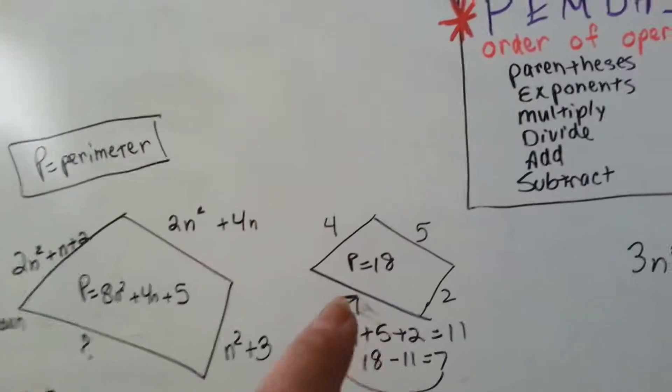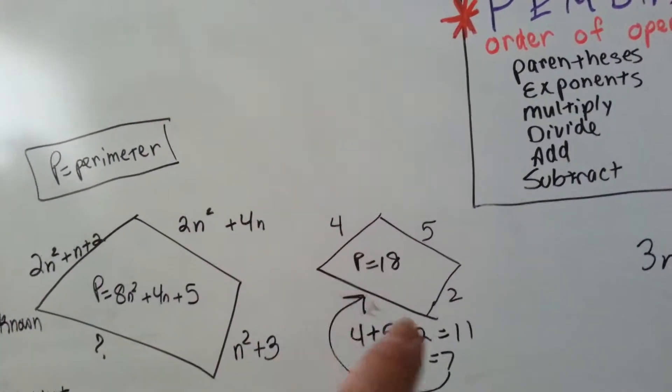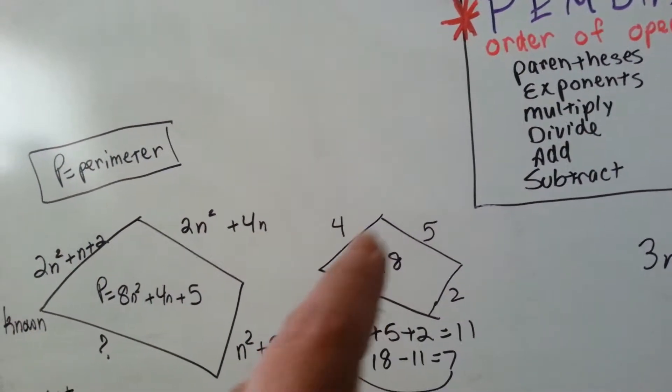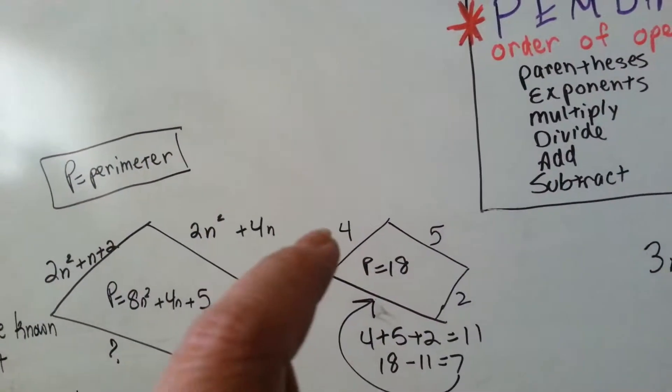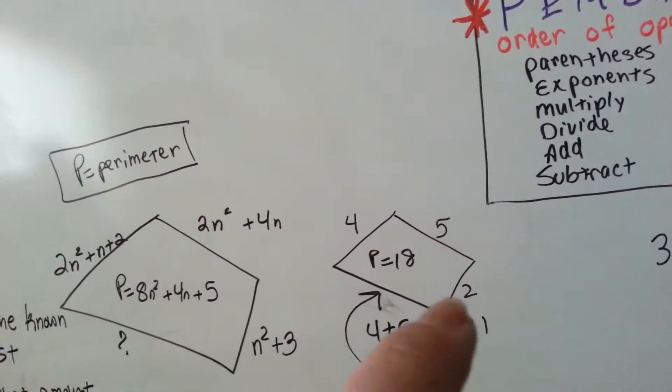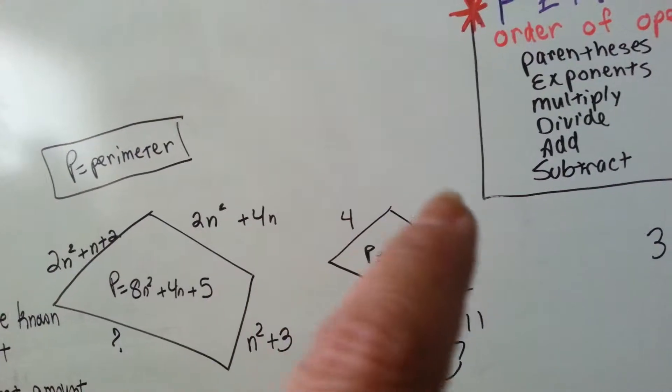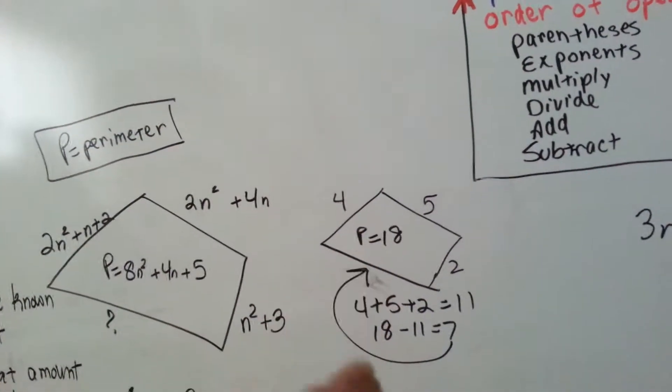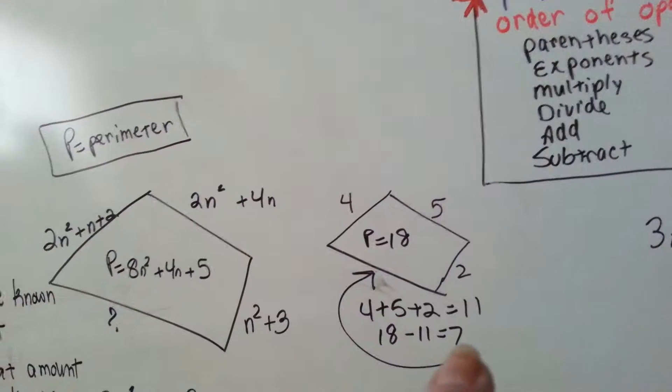What if it was written like this and you needed to find this side and you knew the entire perimeter was 18, and you were given that this was 4, this was 5, and this is 2. Wouldn't you add these three sides up and take it away from the 18? Of course you would. Then it would be 7.